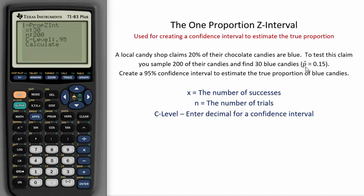In some problems, you might be given the sample proportion and the sample size. 0.15 times 200 would give you 30 successes. We are tasked with creating a 95% confidence interval to estimate the true proportion of blue candies.